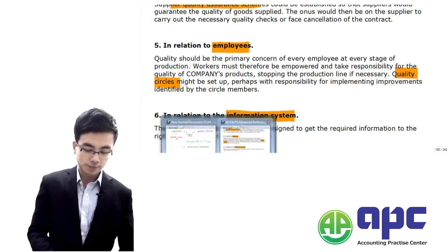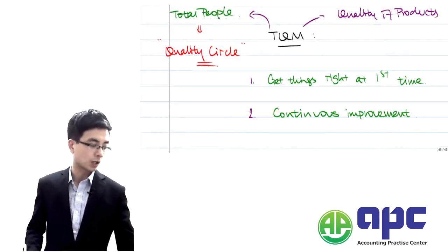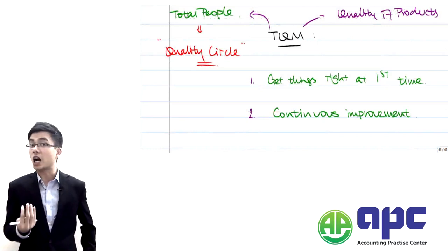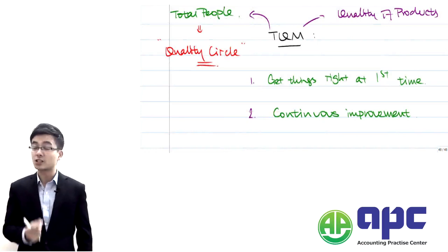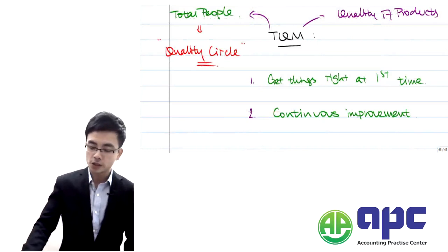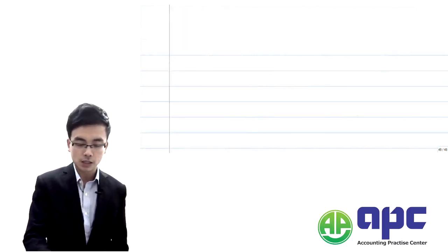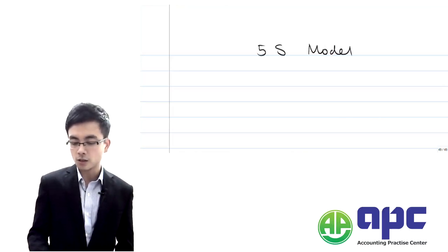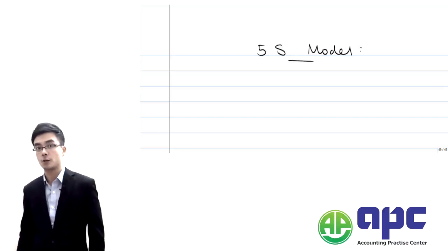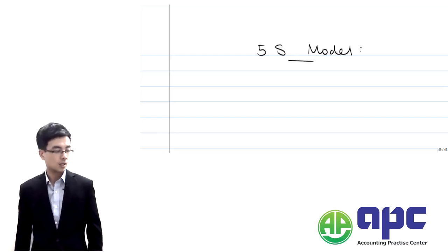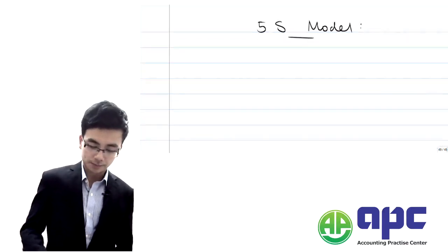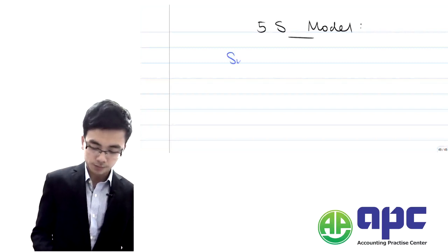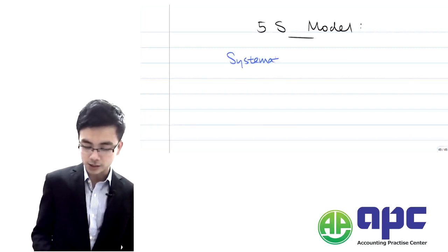Once we've looked at TQM, the next model related to quality is the 5S model. Again, it was developed by Japanese firms. The first S stands for Systematise.